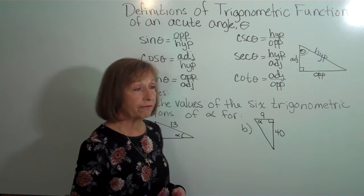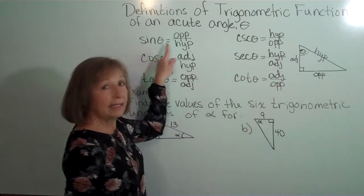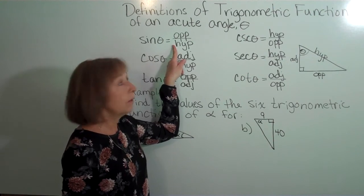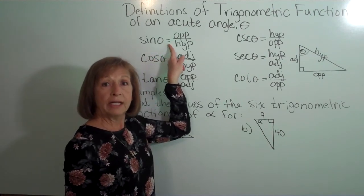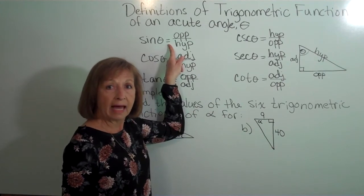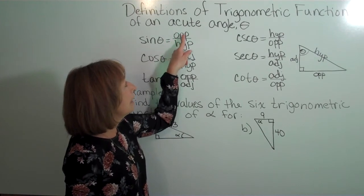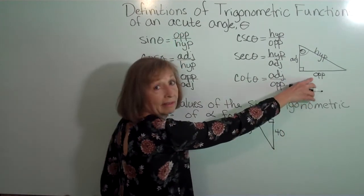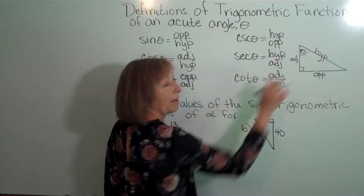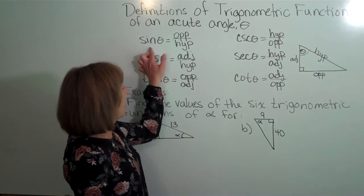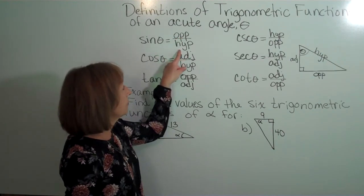Now back to the definitions of the trig functions. The sine of the angle theta is defined to equal a ratio of two sides of the right triangle. It's equal to the length of the opposite side divided by the length of the hypotenuse. So the sine of an angle equals the opposite side divided by the hypotenuse.